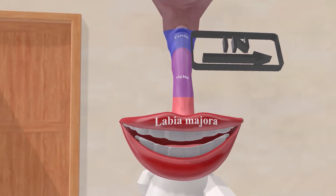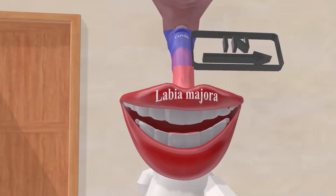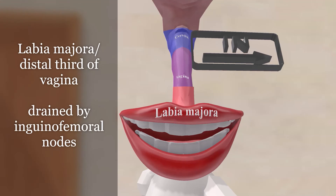Finally, the labia majora, as well as the bottom third — the distal third of the vagina — are drained by the inguino-femoral nodes. We can probably imagine these lips over here singing 'inguino-femoral!' This reminds us that the labia majora, as well as the distal third of the vagina, are drained by the inguino-femoral lymph nodes.